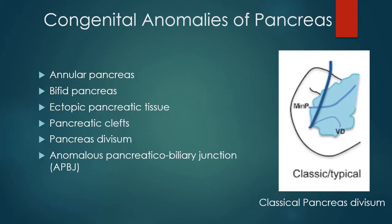Due to this unique pattern of development, many types of congenital pancreatic parenchymal as well as ductal anomalies can occur. Though these anomalies are relatively uncommon, they are often discovered as an incidental finding in asymptomatic patients. Some anomalies may lead to various clinical symptoms such as recurrent abdominal pain, nausea, vomiting, etc.